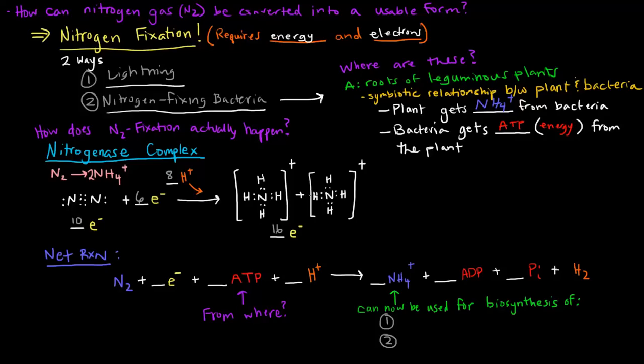This ammonium here, we'll talk in a later video exactly about how it is usable. But for now, this is what I wanted to get at. The overall reaction, essentially what we're going to do is we actually take eight electrons and add them to the gaseous nitrogen. And this process costs 16 ATP, which is actually pretty crazy. We have 16 ATP, which is turned into 16 ADP and 16 inorganic phosphates. These came from the plant.